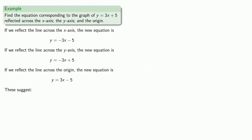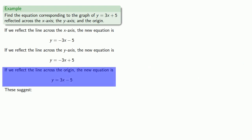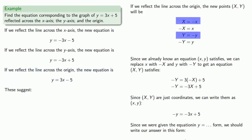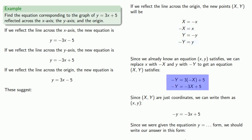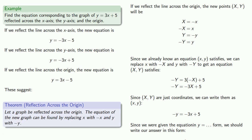And again, when we reflected the line across the origin, we found the new coordinates, solved for the original variables, and substituted to get our new equation. Putting all of these things together, this suggests: let a graph be reflected across the origin. The equation of the new graph can be found by replacing x with negative x and y with negative y.